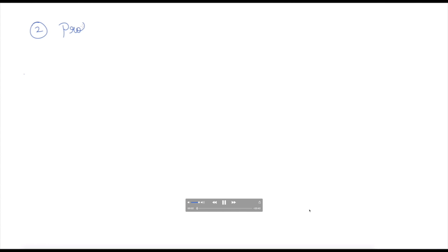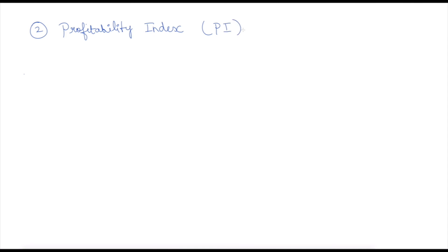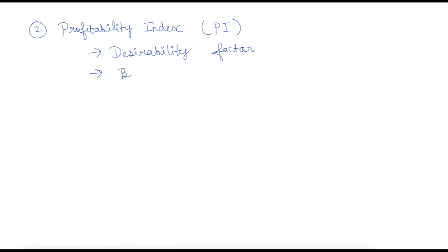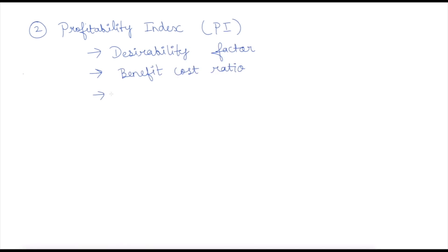In today's video we are going to discuss the second method under discounted cash flow technique called Profitability Index. PI is its abbreviation. This method can be called by many names: desirability factor, benefit-cost ratio, and finally present value index method — which is one of the most famous names for the profitability index.